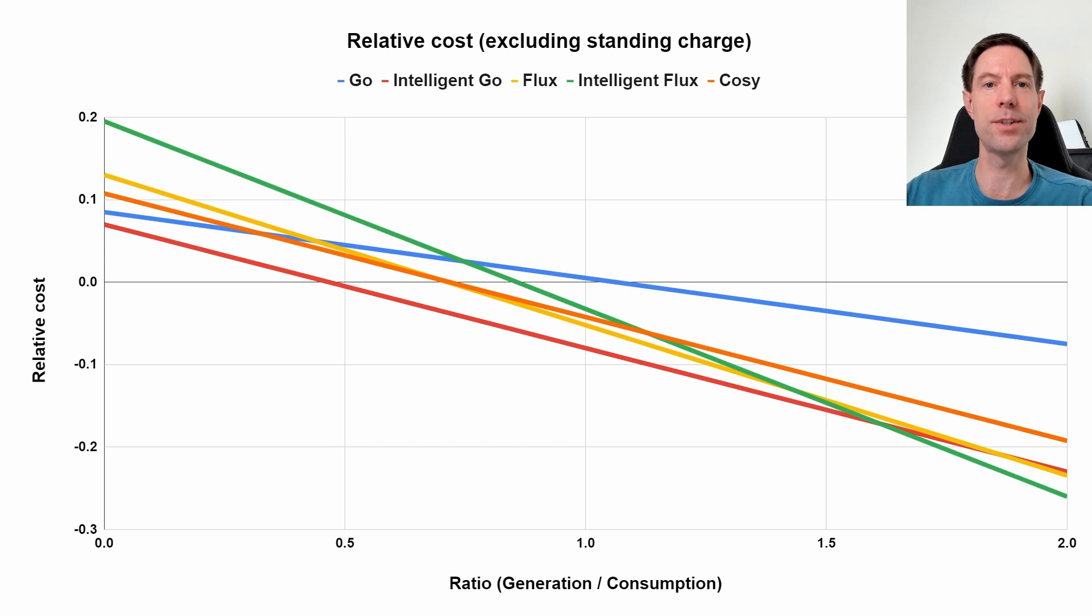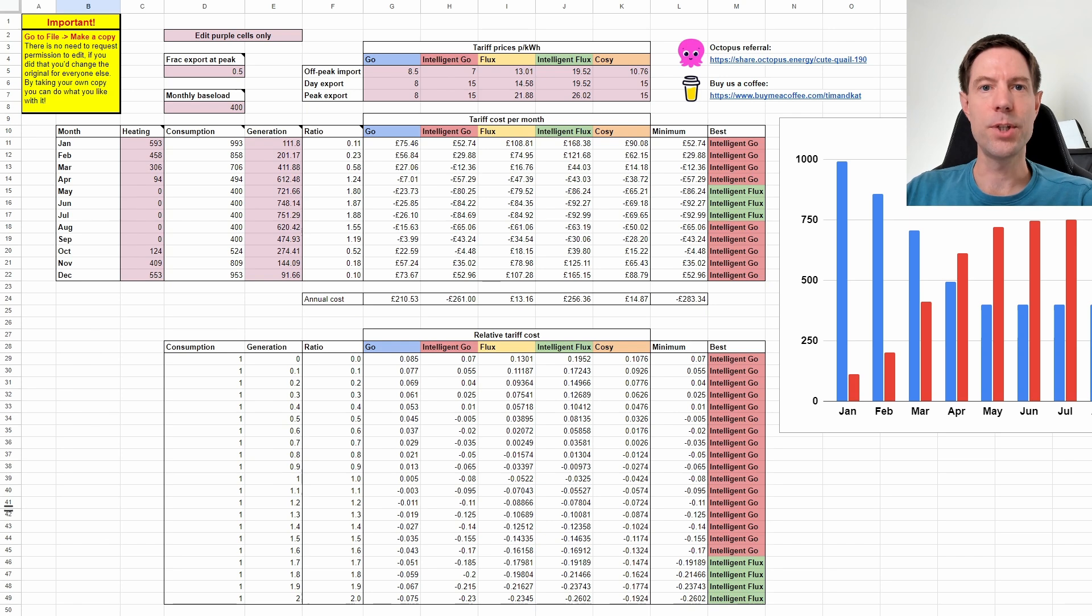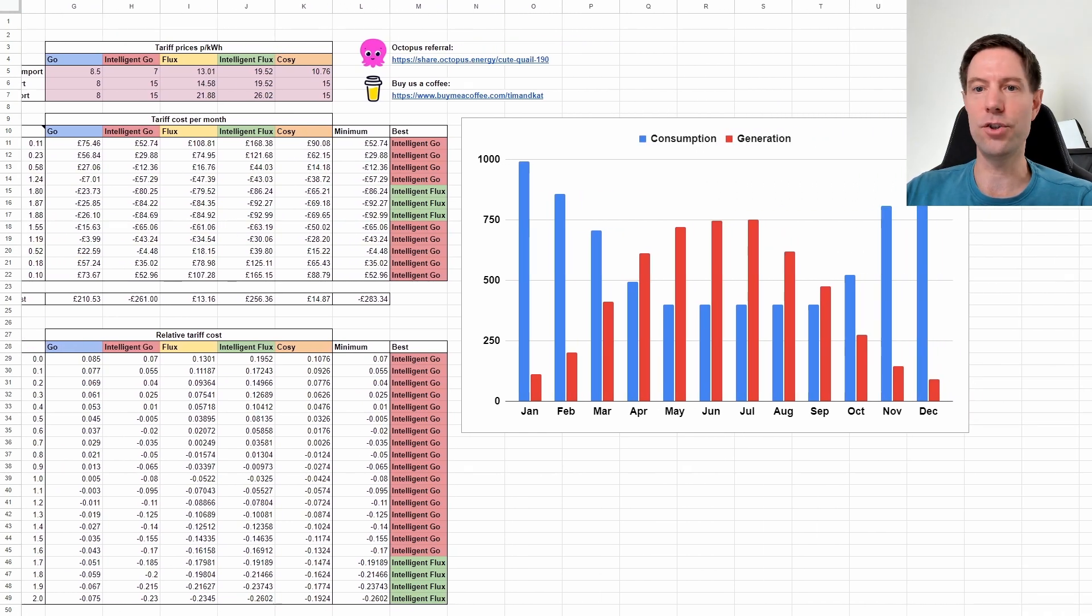So this is the actual rule of thumb spreadsheet which you can download yourself and take a copy of. And if you follow the instructions up in the yellow cells up in the top left hand corner there, you can get your own copy and you can add in whichever tariff prices you like into this set of cells here. You can add in any heating that you've got and your generation to give you your consumption throughout the year versus your generation throughout the year. So this is what you would expect based on a typical year. I've just generated these values using the PVGIS tool so go and check that out if you need to work out what your typical generation levels are each month.